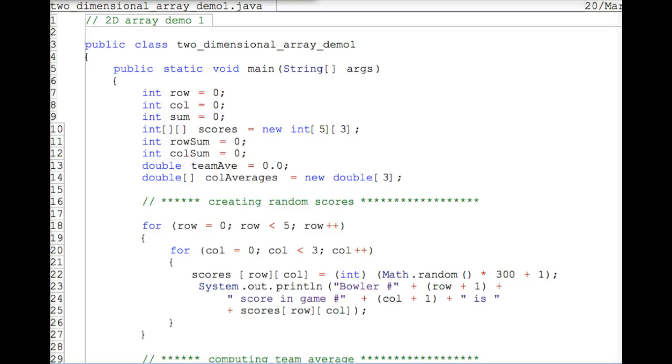Let's trace this program called two-dimensional array demo one. Here we have a client program with the following variables. I'll initialize to zero.